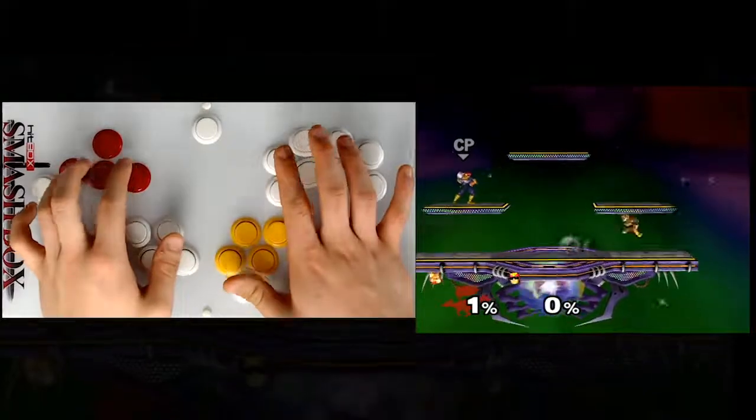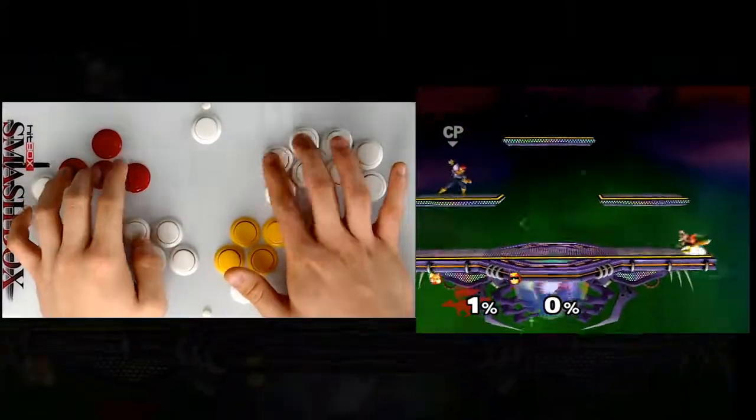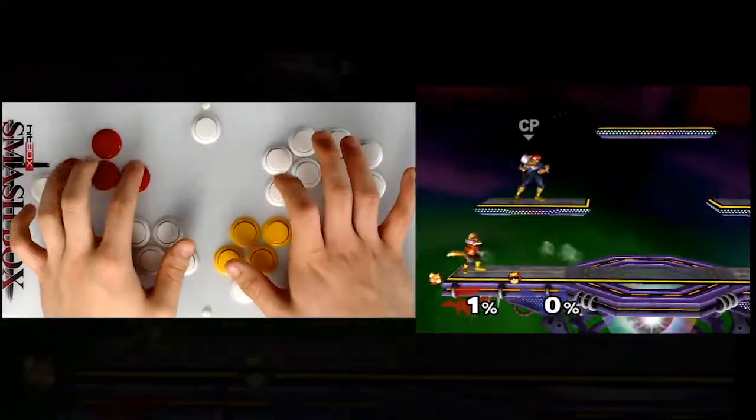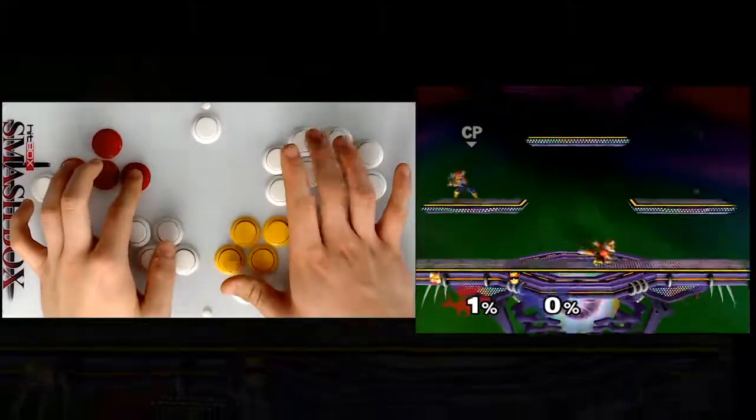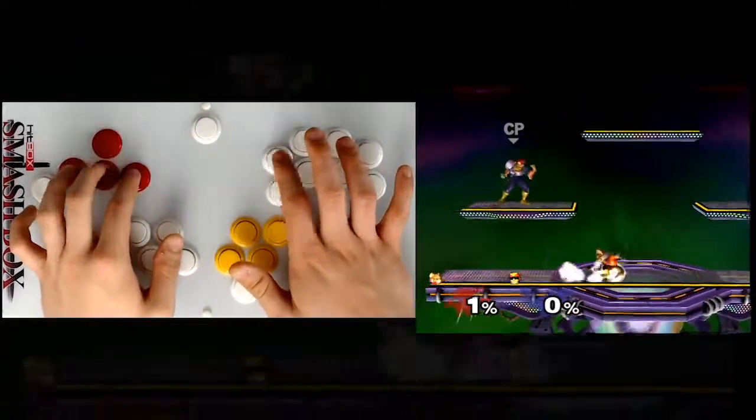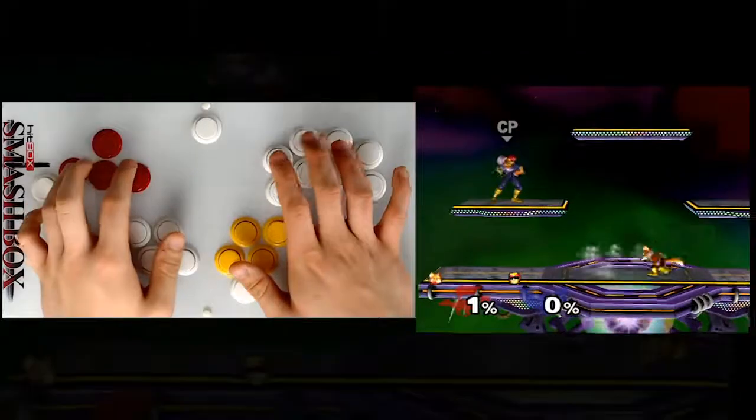And again, this is going to be largely preference. Some characters may not even have to use certain modifiers, so you should figure out which buttons are most important, and put them on the easiest to hit buttons. And the last button that I forgot to mention is that I just have A here, basically through process of elimination.